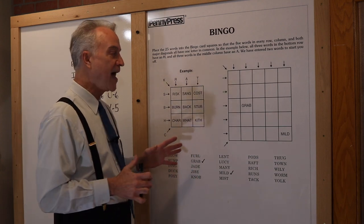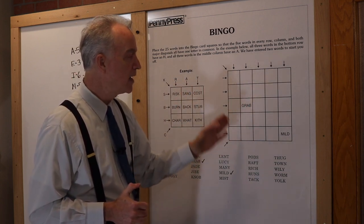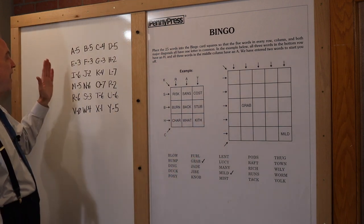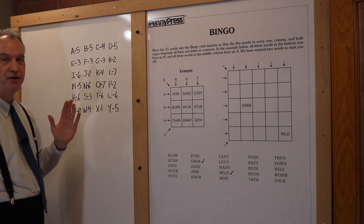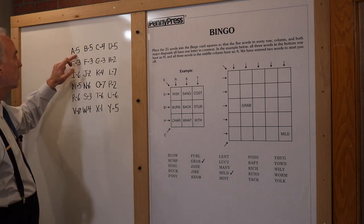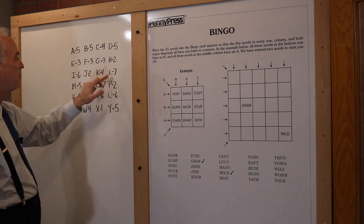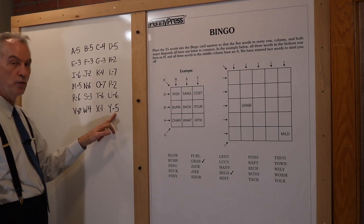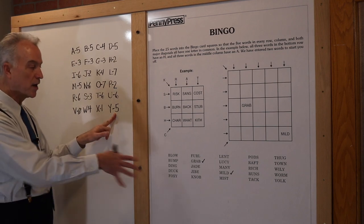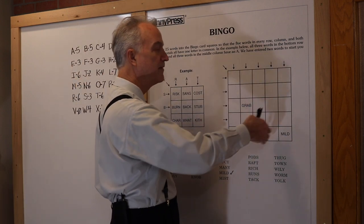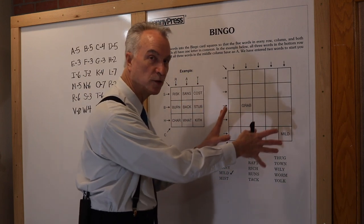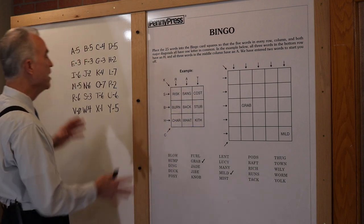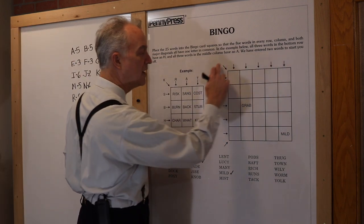We've established that each row, column, and diagonal is going to have to have at least five words with a letter in common. Let's count how many letters have at least five appearances in our list: one, two, three, four, five, six, seven, eight, nine, ten, eleven, twelve letters with at least five appearances. And how many rows? Five rows, five columns, two diagonals — twelve. So we've got twelve instances where we need at least five letters, and twelve letters that meet that criteria. That's the way it's supposed to work out. We now know which twelve letters are going to go on these arrows, but we just don't know where they go yet.